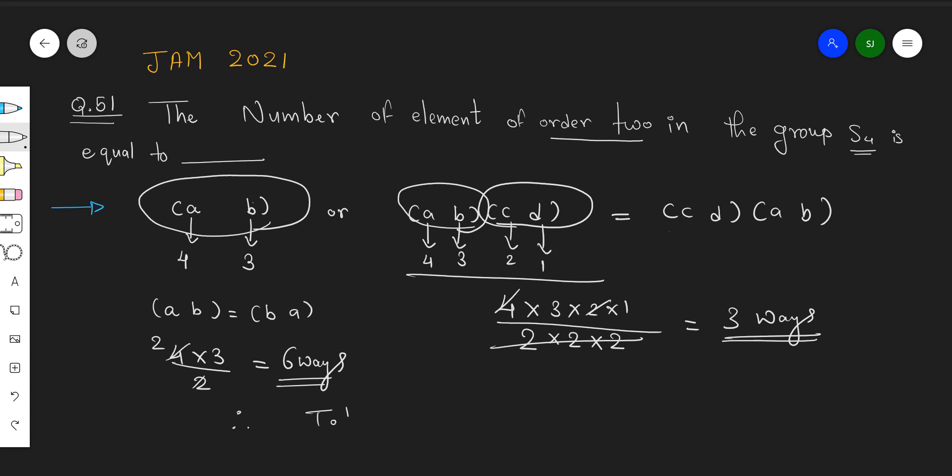Therefore, total 6 plus 3, that is 9 elements of order 2.